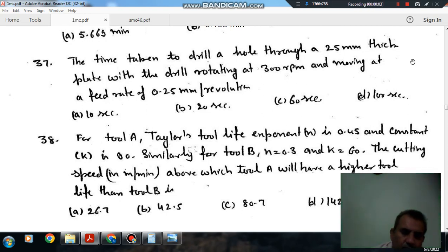Hello, welcome again. We are solving some questions of production or manufacturing science. The topic is metal cutting. Question number 37 is: the time taken to drill a hole through a 25 mm thick plate with a drill rotating at 300 rpm and moving at a feed of 0.25 mm per revolution. Option a: 10 second, option b: 20 second, option c: 60 second, option d: 100 second.